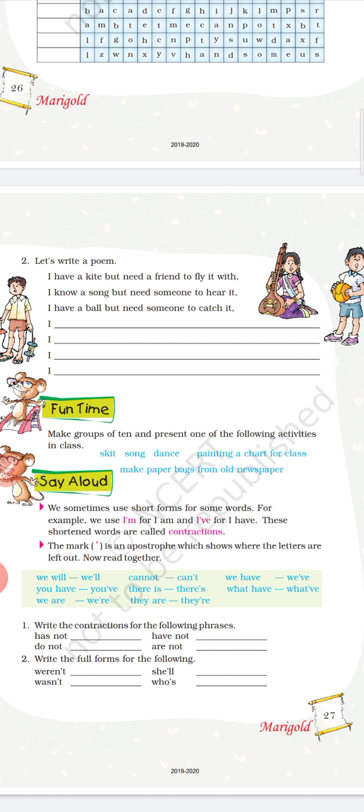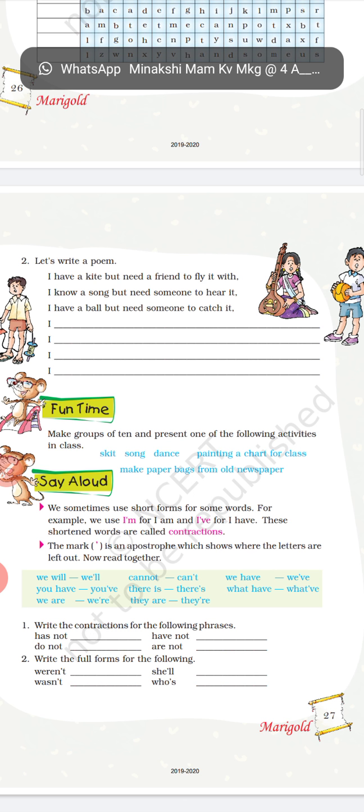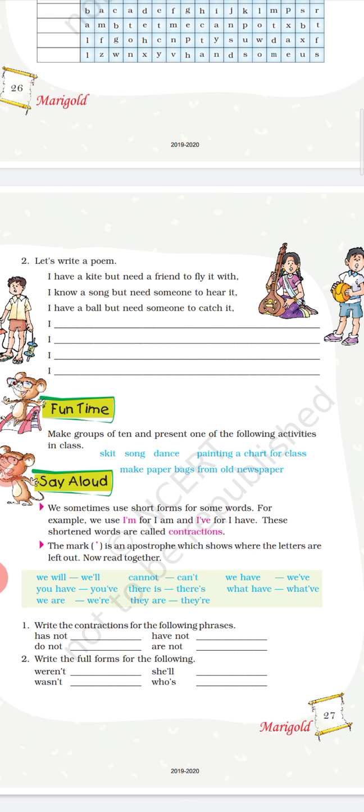Similarly we can write: 'I have a scooty but I need someone to teach me to ride it.' Mere paas ek scooty to hai lekin usko sikhane ke liye mujhe kisi aur ki madad chahiye. Teen sentences hum abhi bana chuke hain aur chautha sentence aap logon ko apni taraf se banana hoga. The last sentence is for you — you should frame it and write it down in your copy and book both.